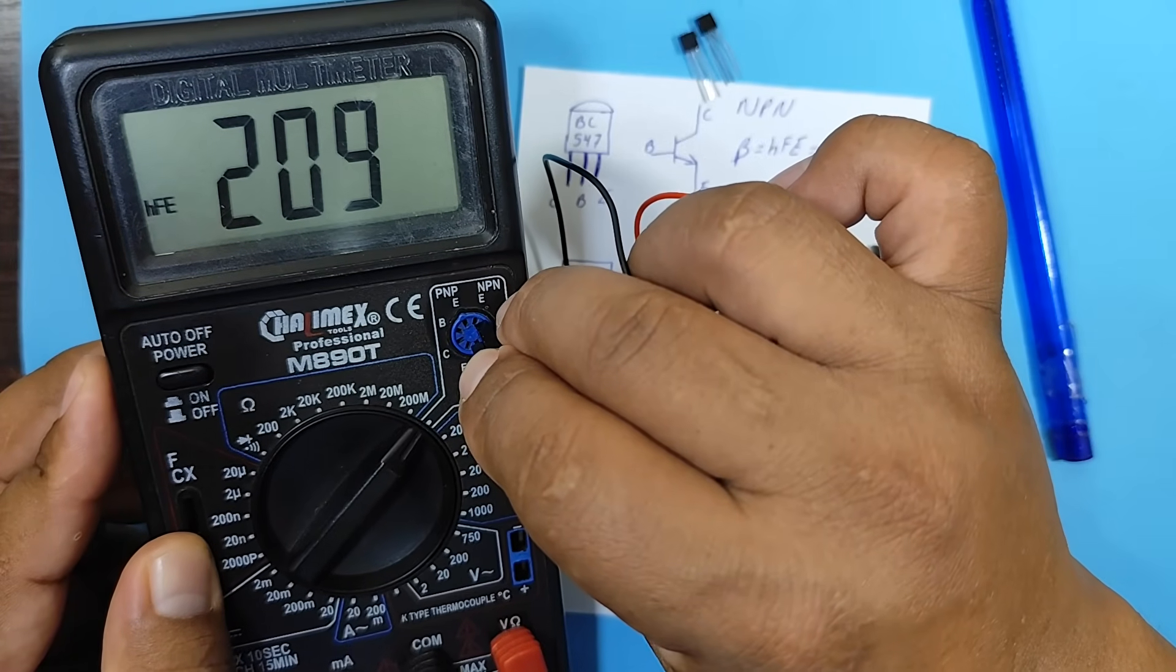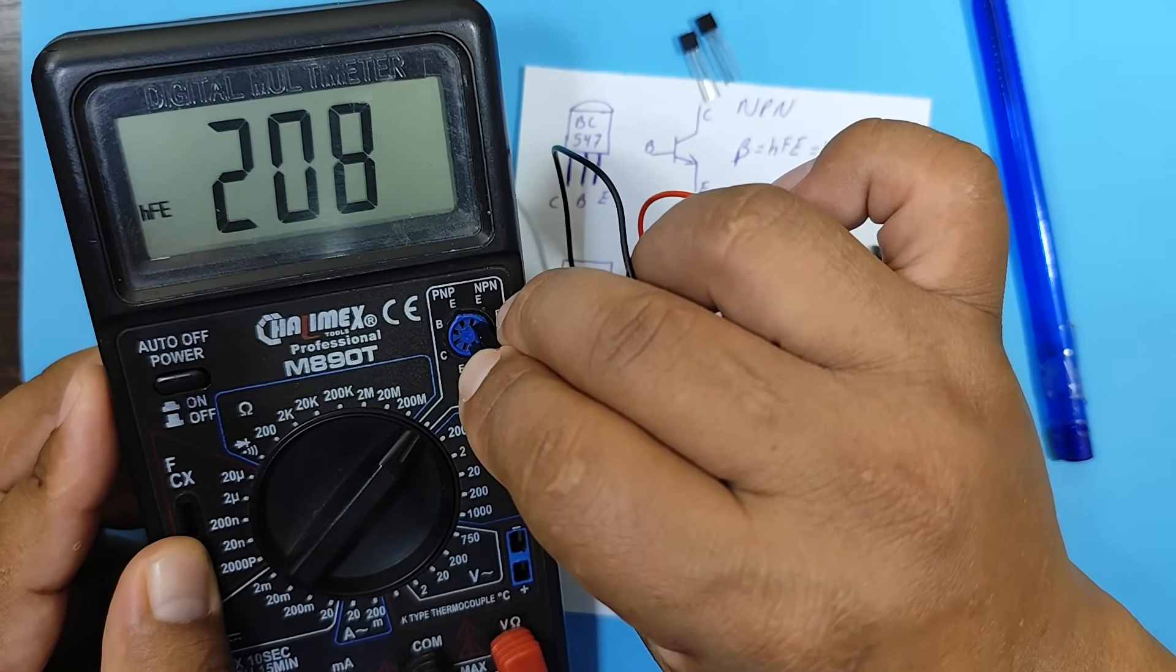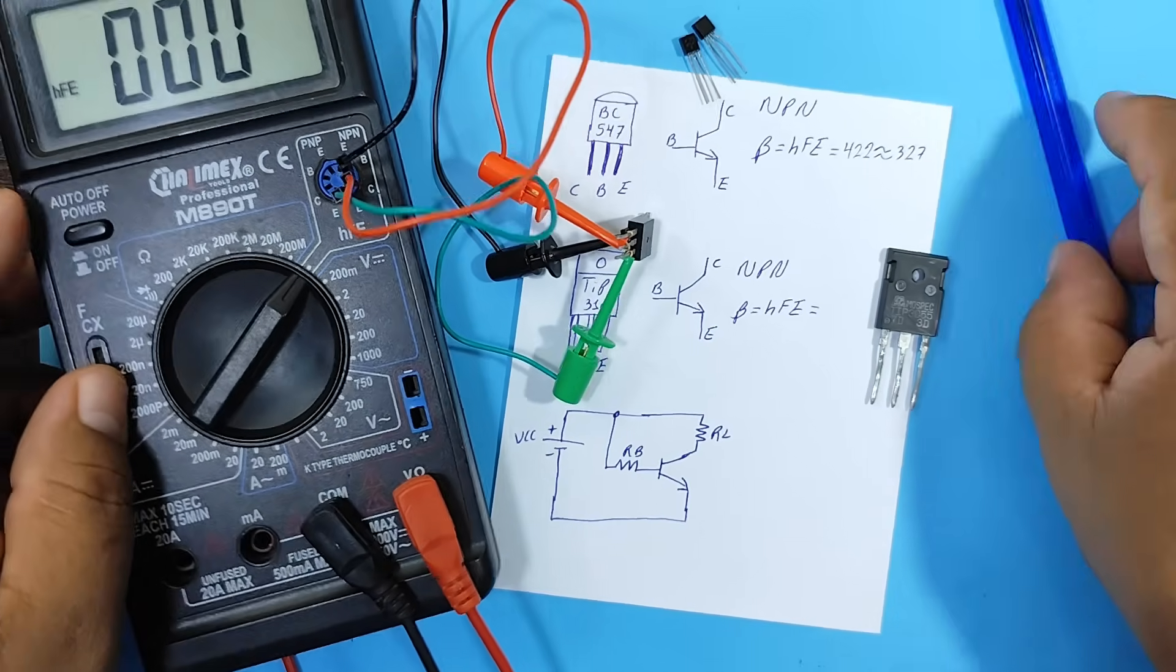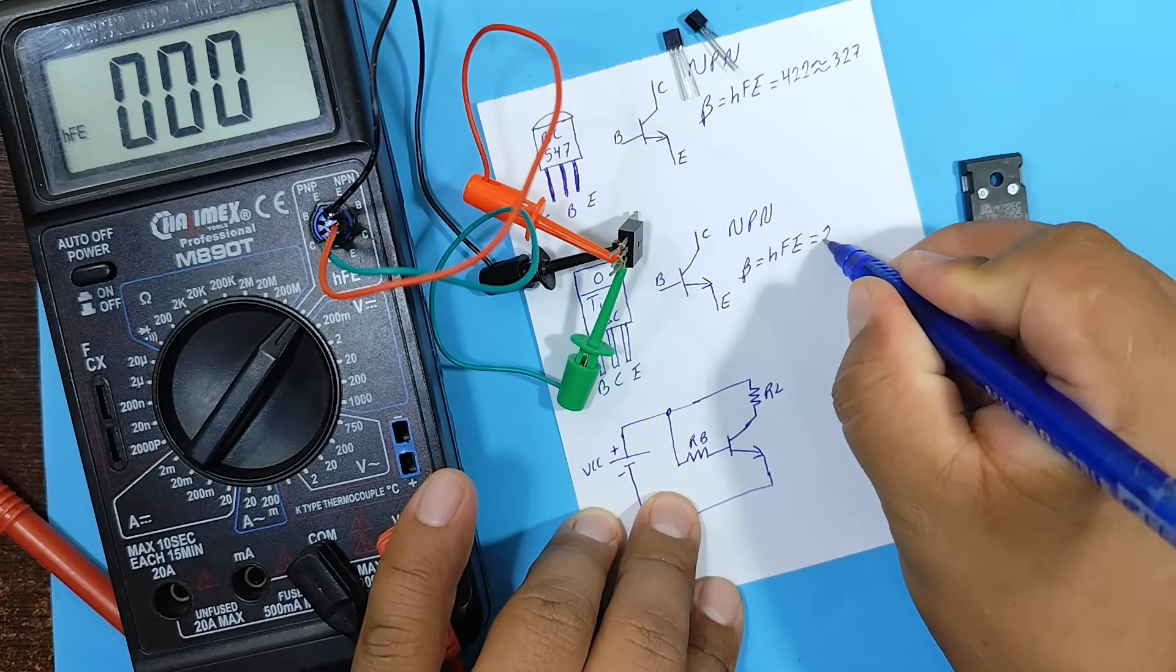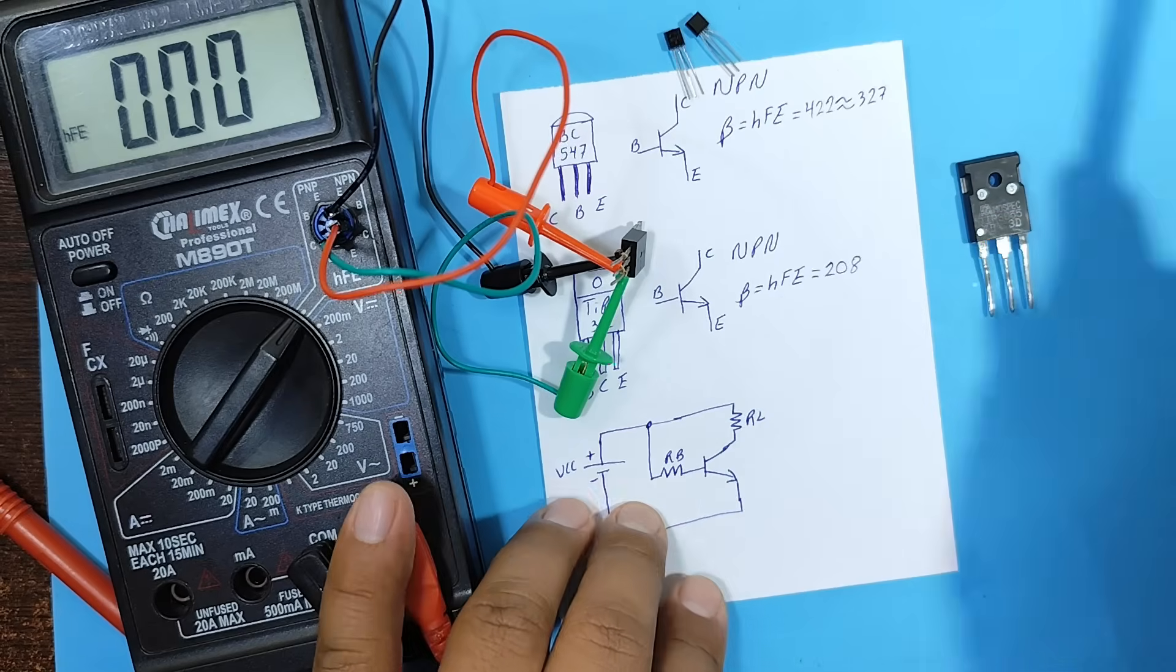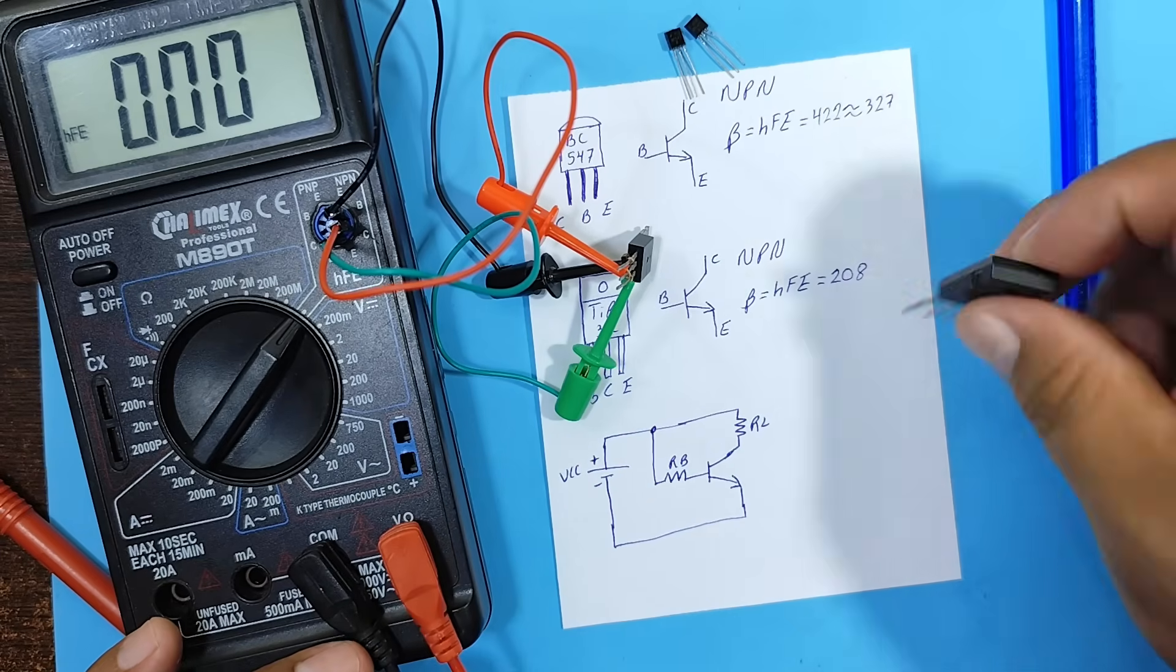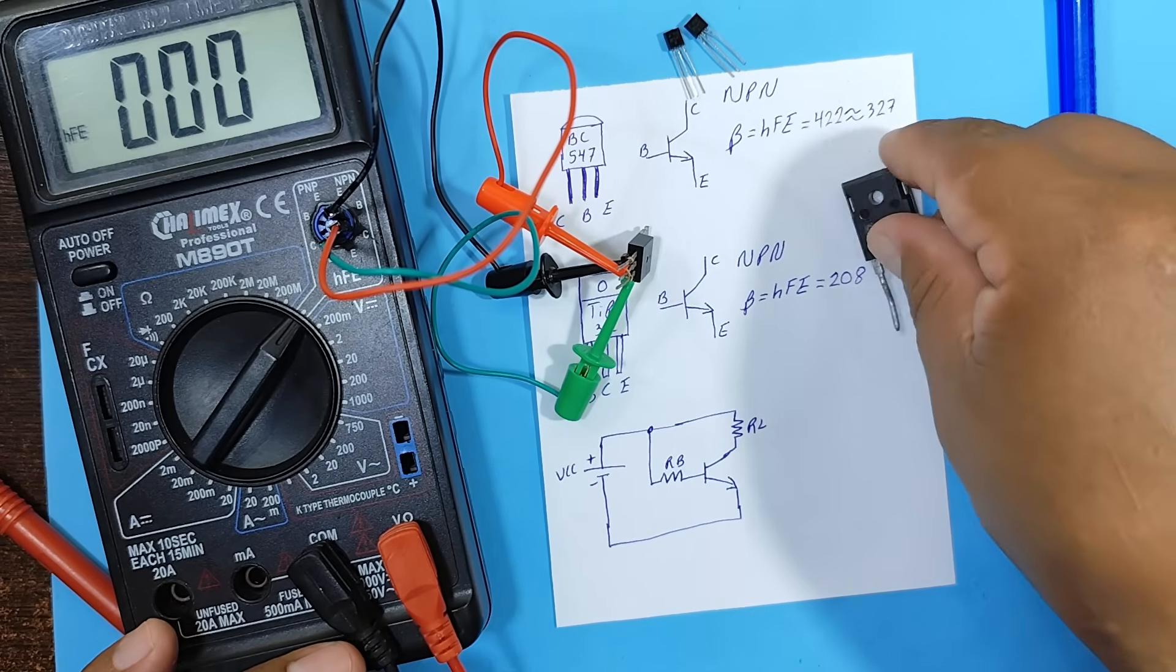And there we can see the gain, which is 208. In the same way, you can find the gain of other, larger transistors.